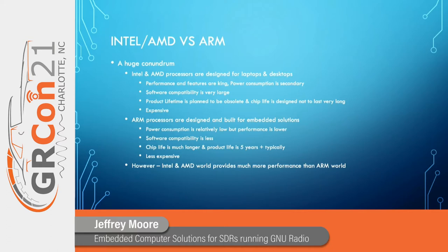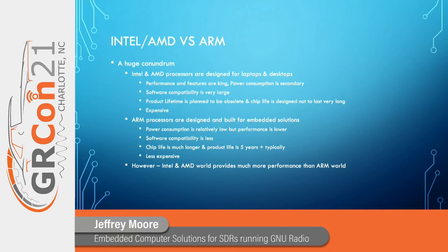ARM processors, on the other hand, are designed and built for embedded solutions. Their power consumption is relatively low. Software compatibility is pretty good, but less than Intel and AMD. The chip life is much longer — not just technically, but from a marketing perspective: how long does that company continue making that chip so you can use it in an embedded product? We look for product lifetimes of five to ten years minimum. So what do we do?